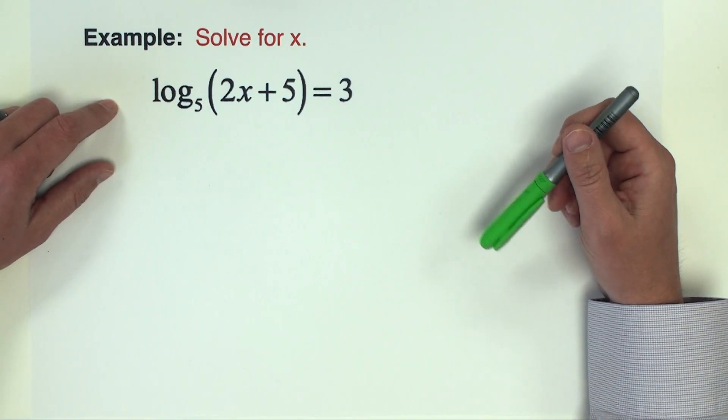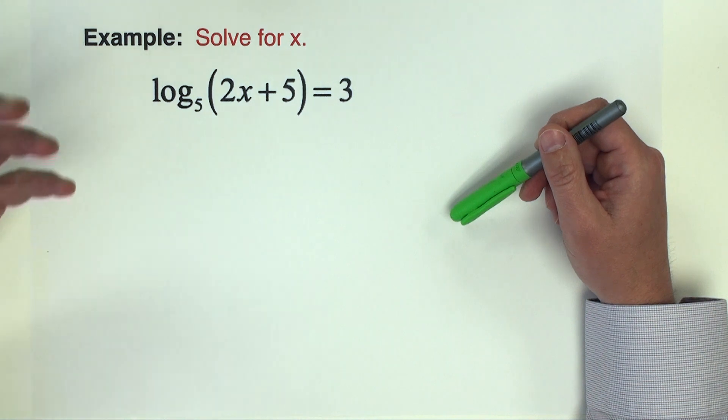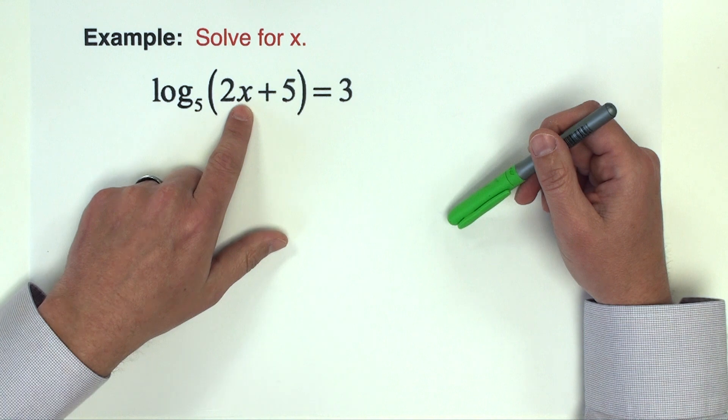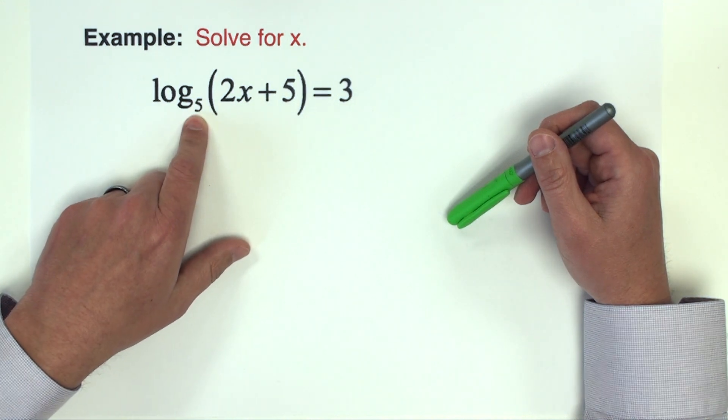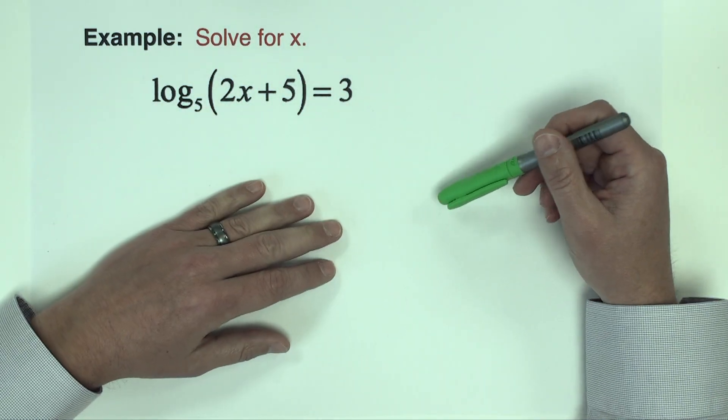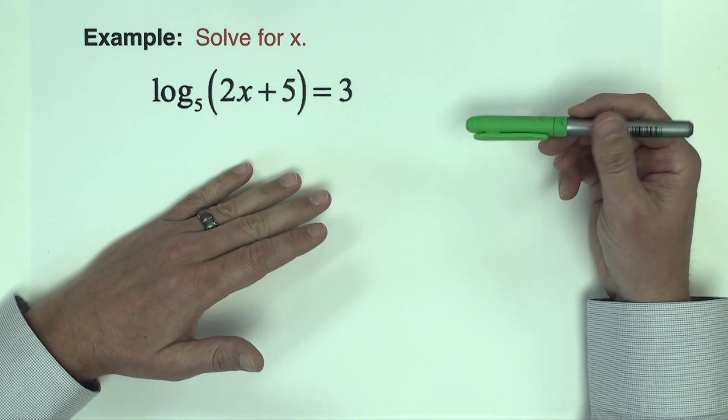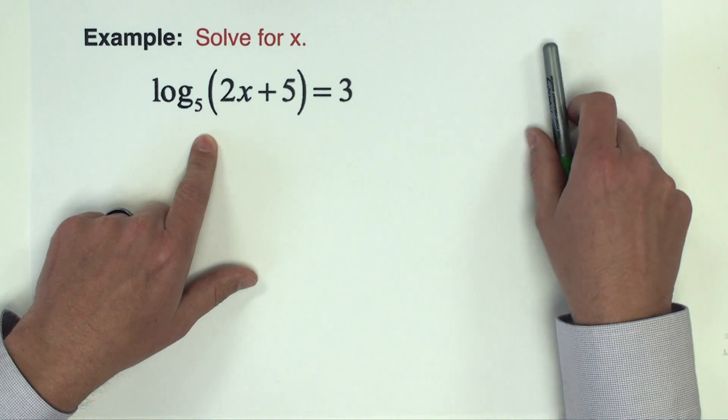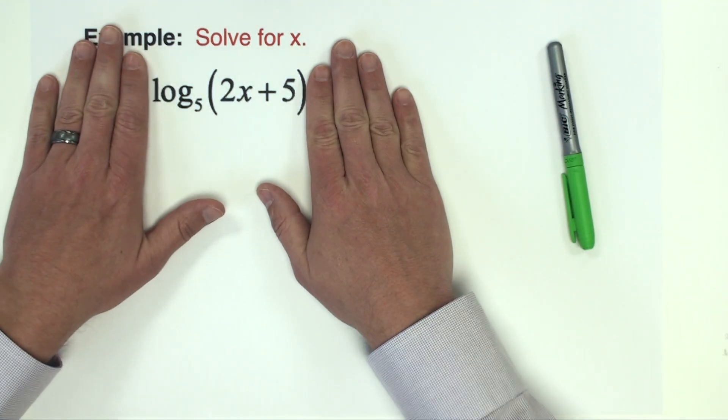The first example as you can see is an equation we're trying to solve for x, but the x here is trapped inside of a logarithm so that's how this equation is a little bit different than the first few videos we saw in this series. When the equations have a single logarithm like this, the first thing you want to do is get the logarithm by itself.